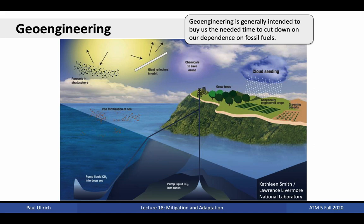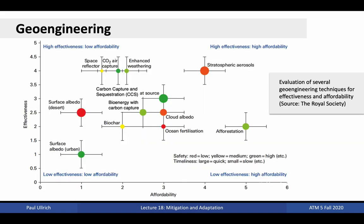Geoengineering is generally viewed not so much as a long-term solution, but more as a means to buy us the needed time to cut down on our dependence on fossil fuels. A comprehensive assessment by the Royal Society depicts the affordability of these solutions versus their effectiveness. The most affordable solutions are found to the right, the most effective solutions towards the top. The colored dots indicate the relative safety of these measures, while the size of the dot indicates the timeliness of the solution. Some of the most promising options include stratospheric aerosols, afforestation, and carbon dioxide capture. On the other end of the scale are modifications to surface albedo, effectively repainting the planetary surface, which are generally highly unaffordable.